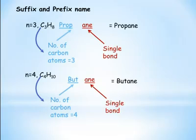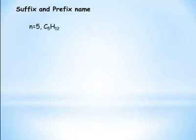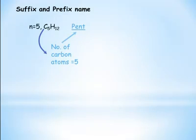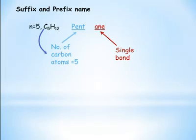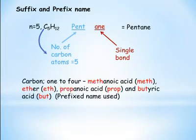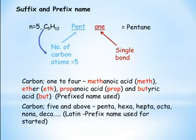If you want to understand further, the naming continues. For n equals 4, this is butane. C5H12 is pentane. And C6 is hexane — these follow the same naming pattern for the alkane series.